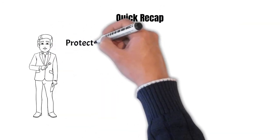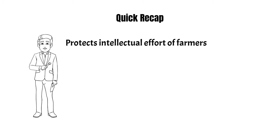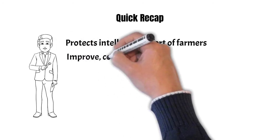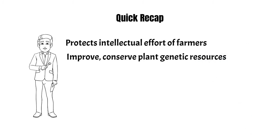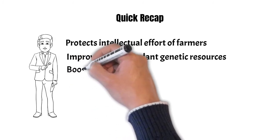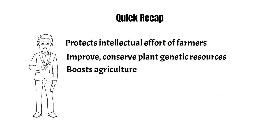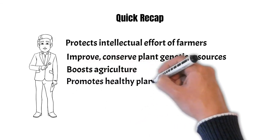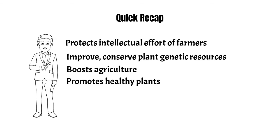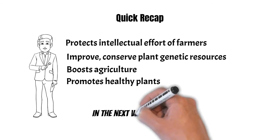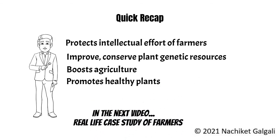Now let us recap what we saw today. First, the Protection of Plant Variety and Farmers Act provides a system to protect the intellectual efforts of farmers, which encourages the development of new varieties of plants. It also helps in conserving, improving, and making available plant genetic resources for new plant varieties. Third, the protection of intellectual efforts of farmers helps gain momentum in agricultural development, which in turn boosts agriculture allied industries. Finally, this also helps in facilitating healthy quality plant seeds and propagating elements for farmers. In the next video, let us look at case studies where farmers have developed new plant varieties — like a mango variety that is available throughout the year and many more. Thank you.